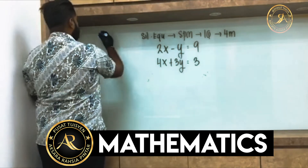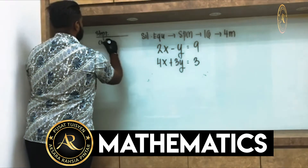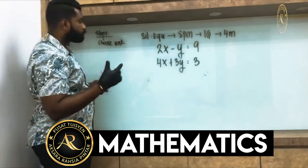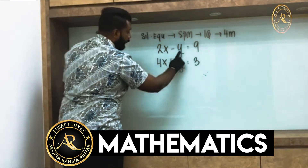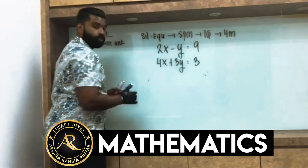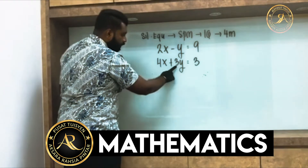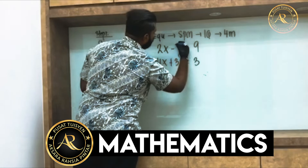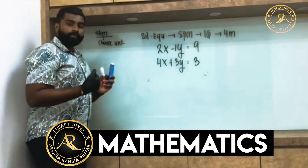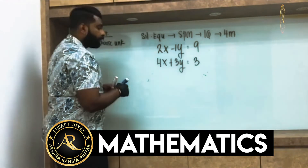Step number one: choose your unknown. We have x and y in both equations. You can choose x or y. My suggestion is to look at the smallest coefficient — the smallest number here is 1 (the coefficient of y in equation one), so I'm going to choose y.